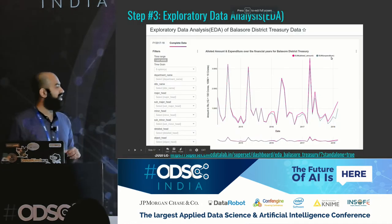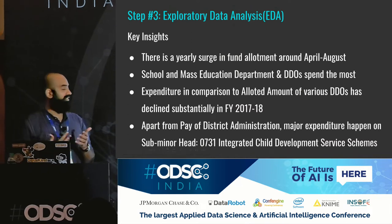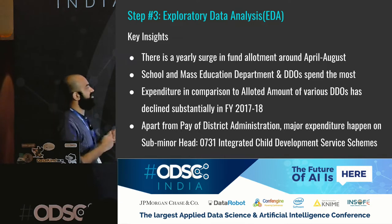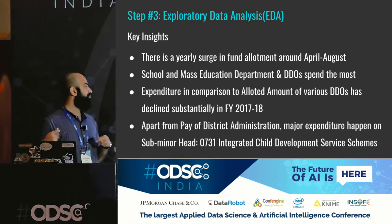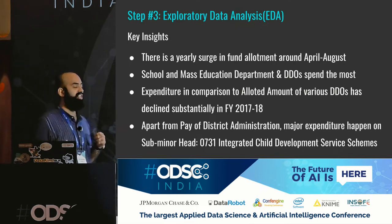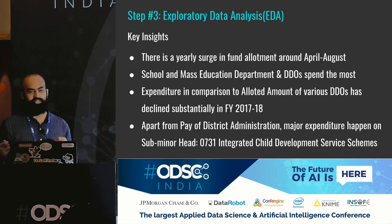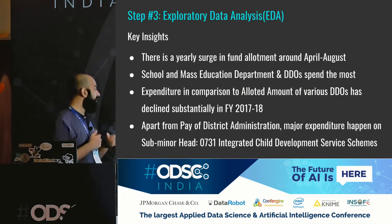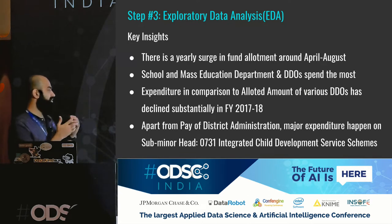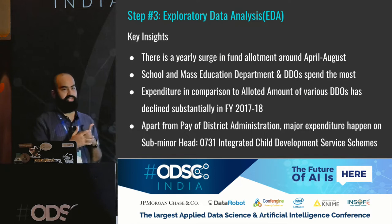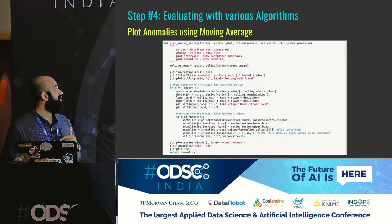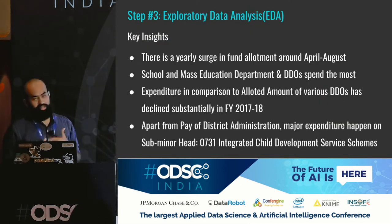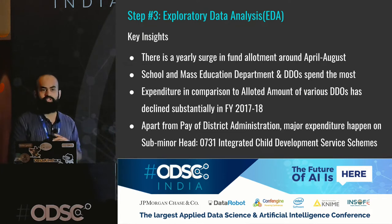Just summing up the key insights: there is a yearly surge in fund allotment around April to August. School and mass education department and the associated DDOs spend the most. Expenditure in comparison to allotted amount of various DDOs has declined substantially in financial year 2017-18, especially after October. Apart from pay of district administration, major expenditure happens on sub-minor head 0731, which is integrated child development service schemes. These are crisp data points for a public accountability tool to ask the right questions.